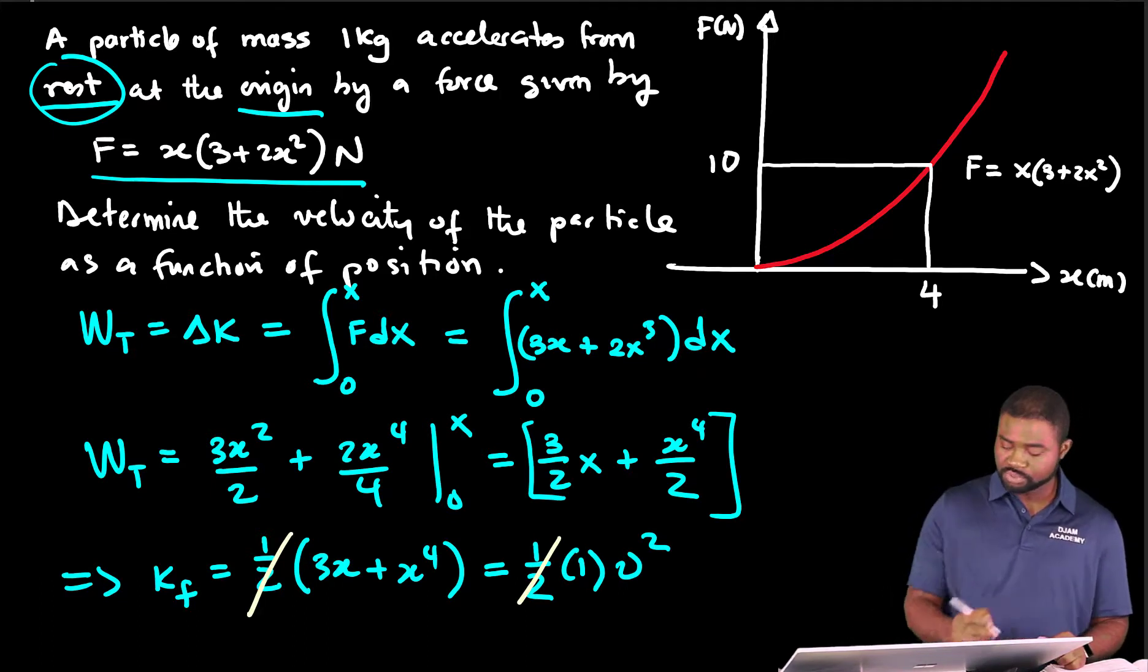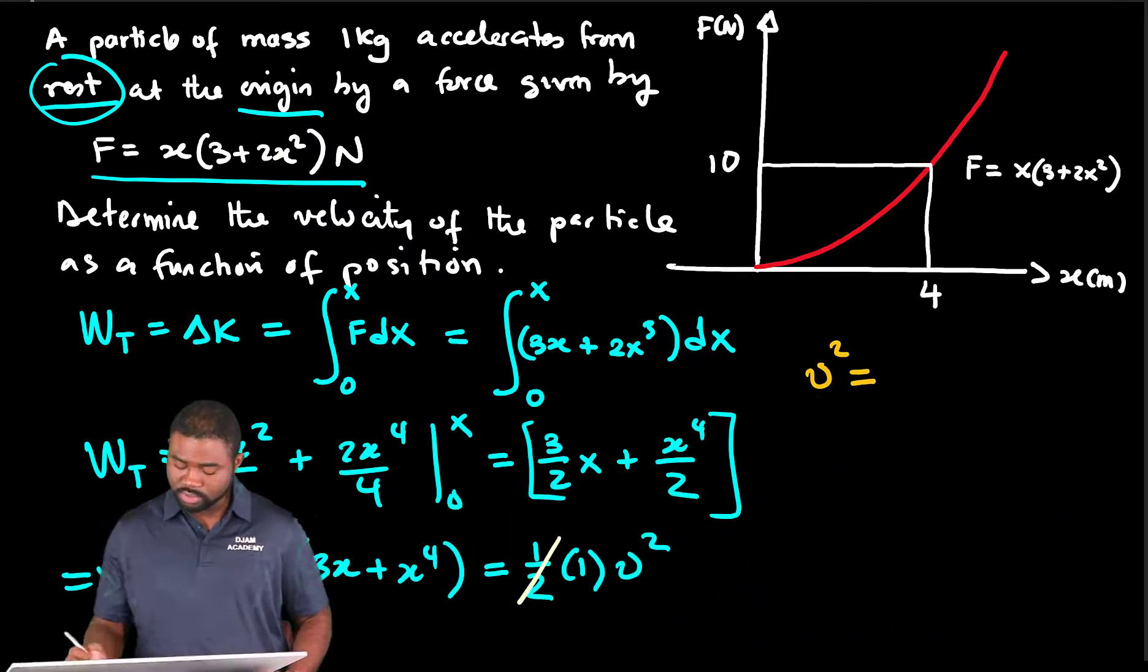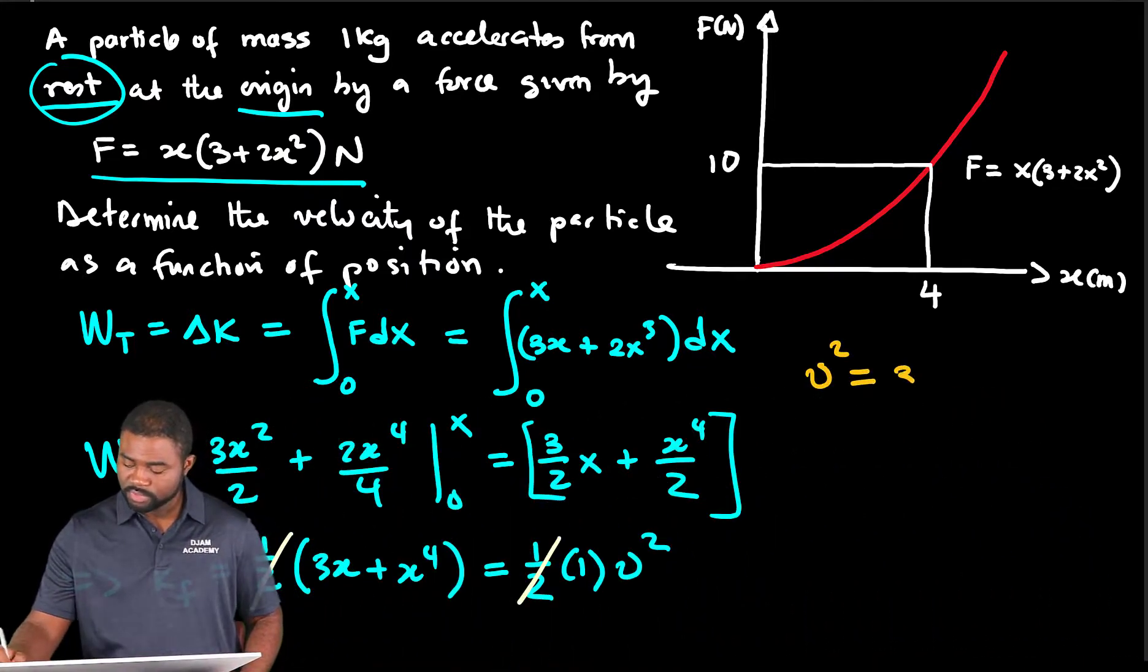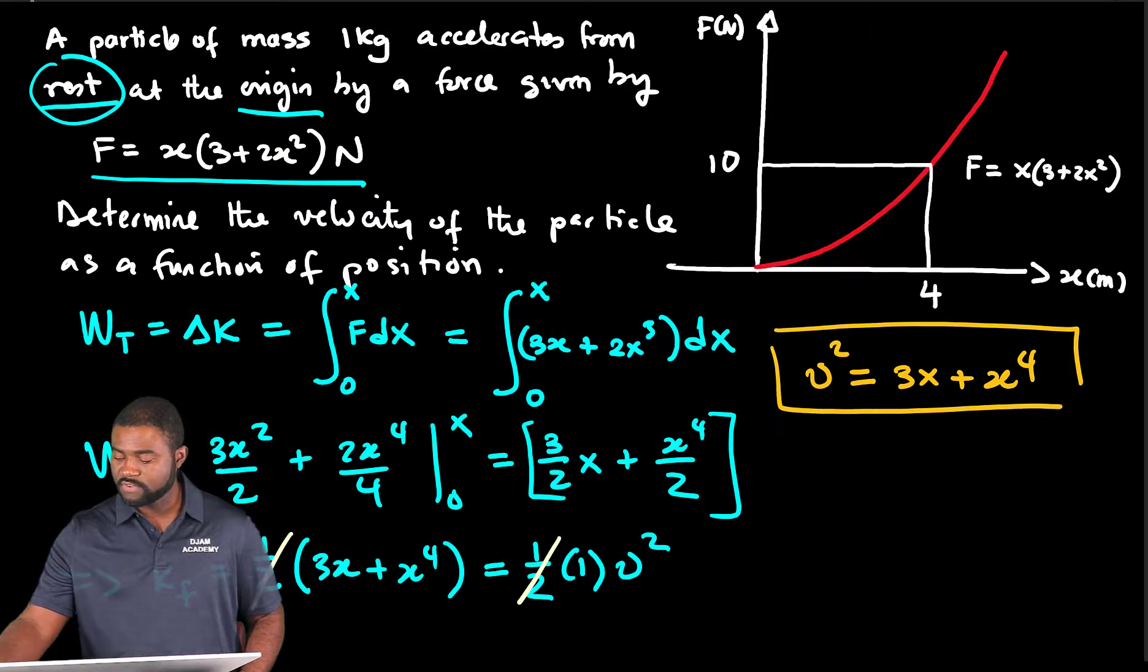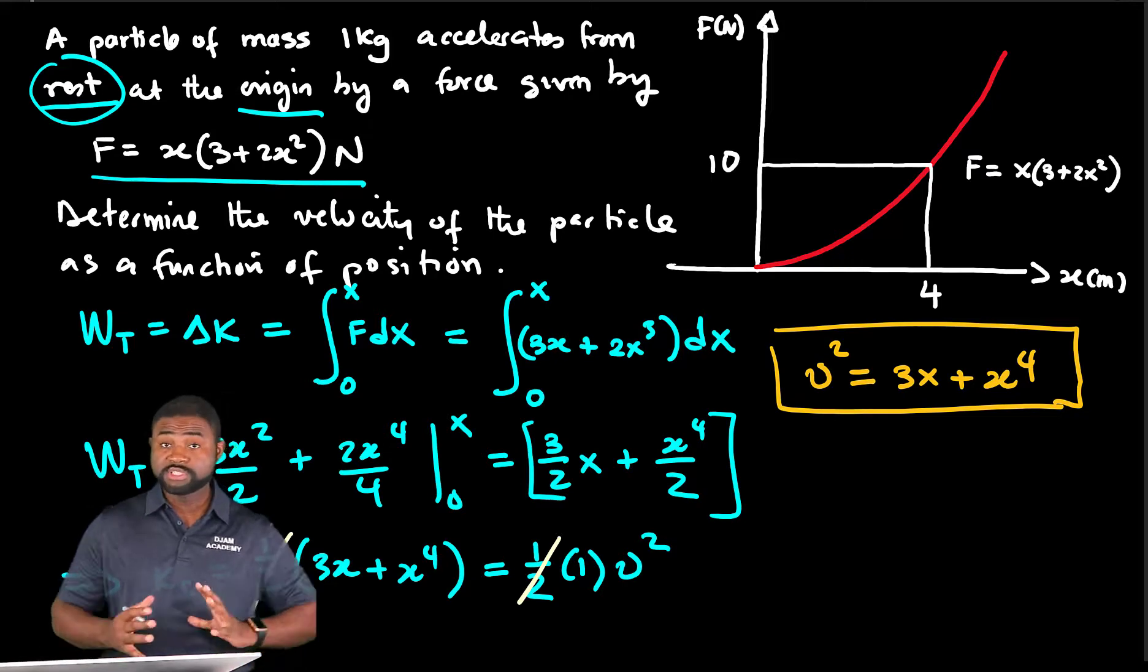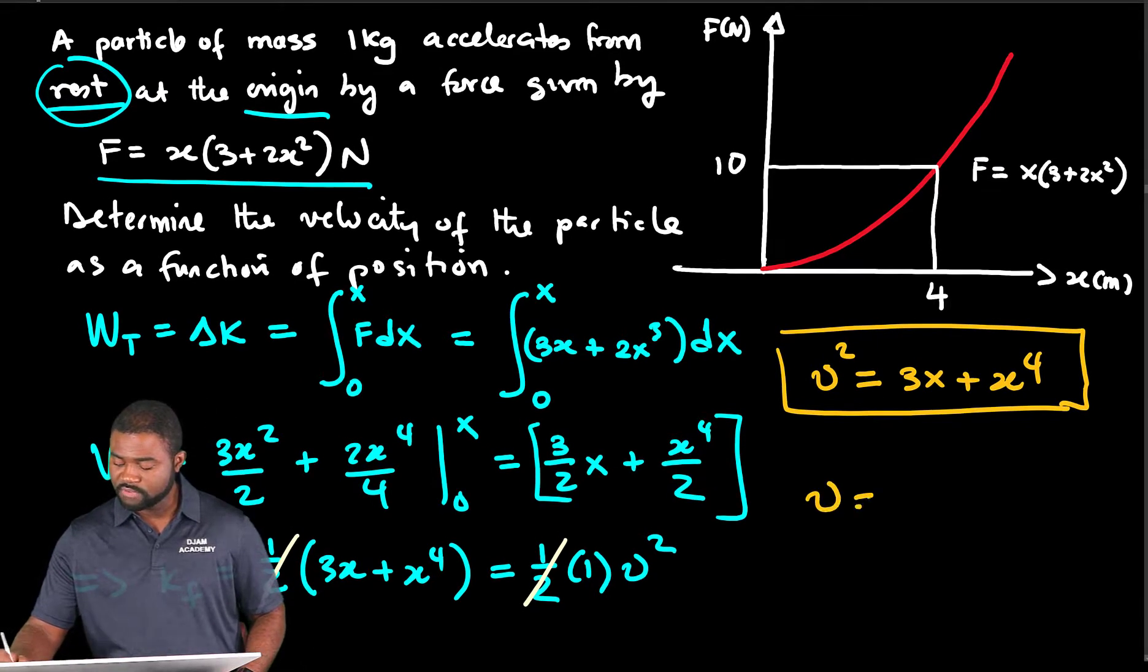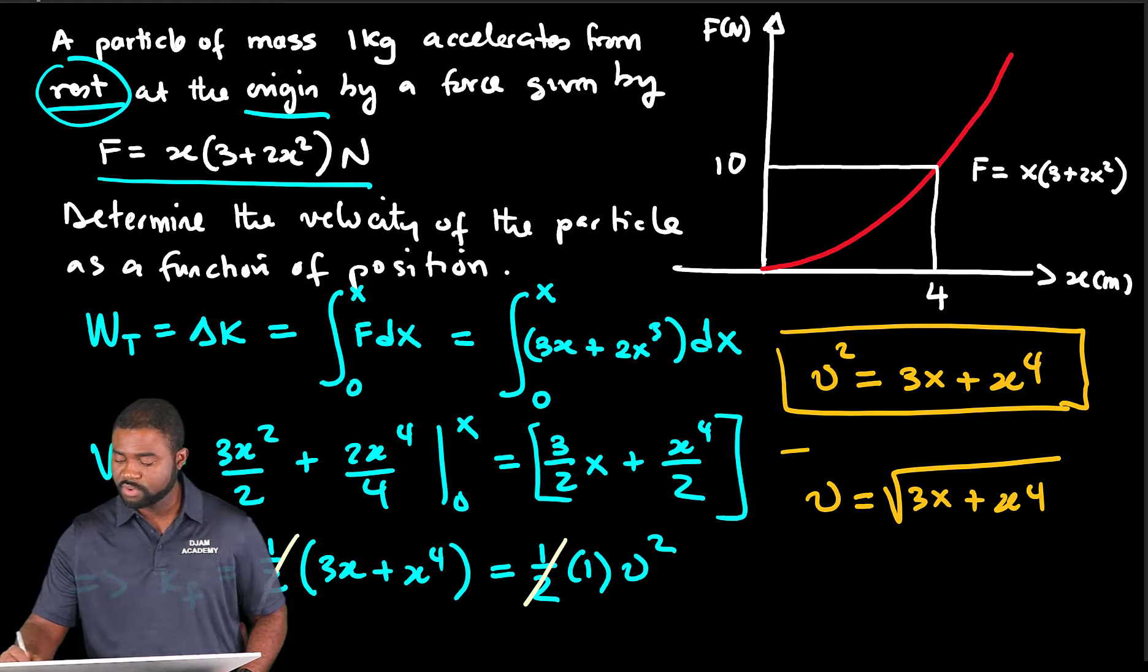If that is true, we are left with v² = 3x + x⁴. Now if you want to simplify things to their simplest form, that would mean v equals the square root of (3x + x⁴).